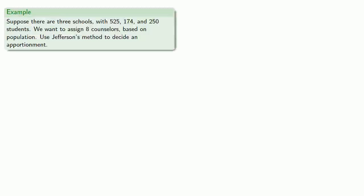For example, suppose there are three schools with 525, 174, and 250 students. We want to assign eight counselors based on population. And for contrast, let's use Jefferson's method to decide an apportionment.